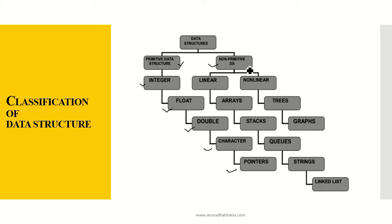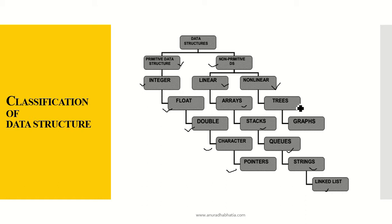Non-primitive data structures are divided into linear and non-linear data structures. Linear data structures are those where elements are arranged in a sequence in a systematic manner — these are arrays, stacks, queues, string operations, and linked lists. Non-linear data structures are trees and graphs. We will be covering these in the following videos.